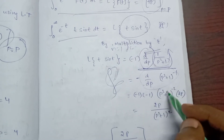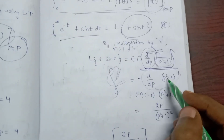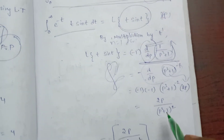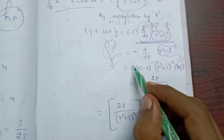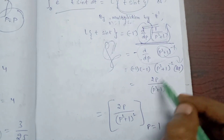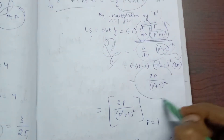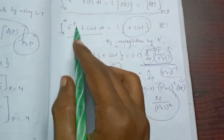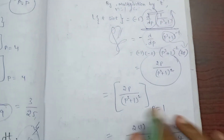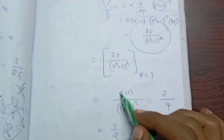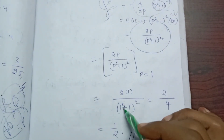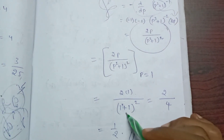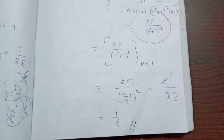Now substituting p equal to 1: 2 times 1 divided by (1² + 1)², which is 2 divided by (1 + 1)², which is 2 divided by 4, giving the answer 1/2.